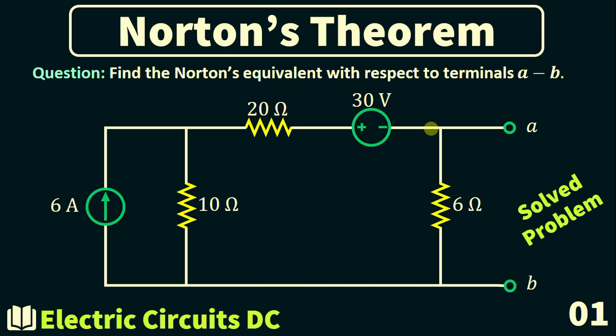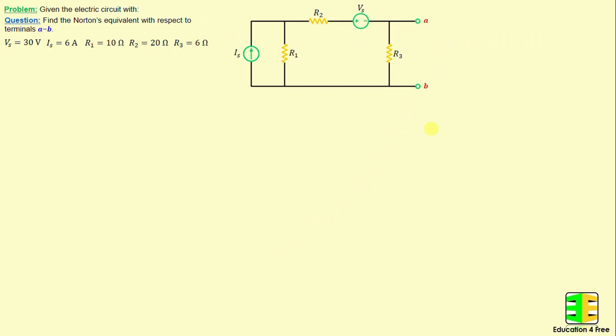Greetings, welcome to this new video about Norton's theorem. In this video I will show you how to use Norton's theorem with an easy-to-follow example. By watching carefully you will learn how to apply Norton's theorem to solve practical problems. Let's get started with problem number one. Let's consider this network consisting of three resistors labeled R1 through R3, one independent voltage source Vs, and one independent current source Is. The question is to find the Norton's equivalent with respect to terminals A and B.